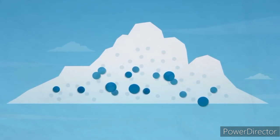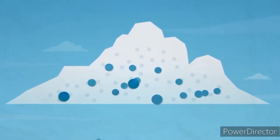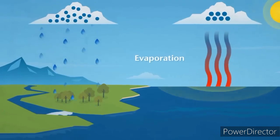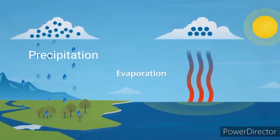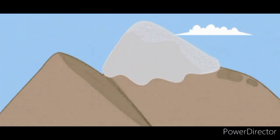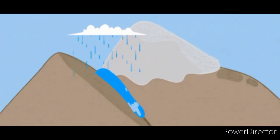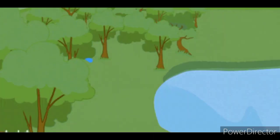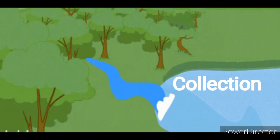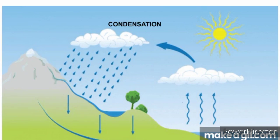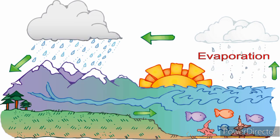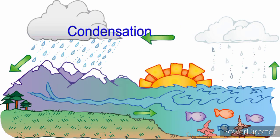When the cloud becomes too heavy, it bursts open to give out rain. This is known as precipitation. Now you know how we get rain. This rain water gets collected in oceans, rivers, lakes, ponds, etc. This process is known as collection. Since this is a continuous process, it is known as the water cycle.